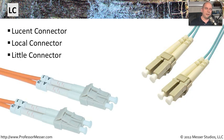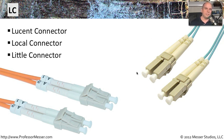As technology allowed us to shrink down fiber connections, a new type called the LC connector emerged. LC stands for Lucent connector or local connector — some people call it the little connector, and indeed it is much smaller than the ST or SC connectors. They're usually packaged in pairs, making it easy to plug in both transmit and receive fiber in one connection. They have little locks that secure into your networking equipment, and the smaller size allows a larger density of fiber connections in the same amount of space.